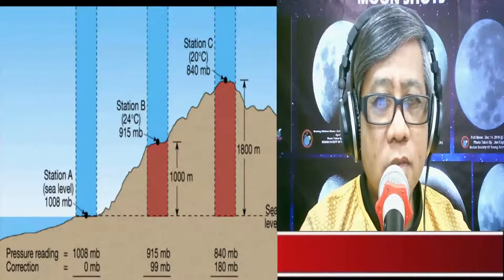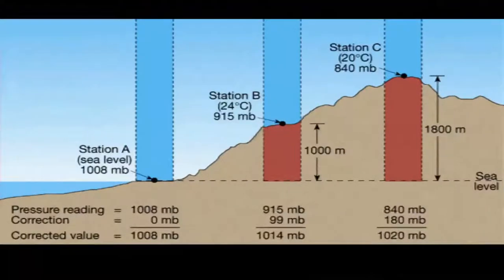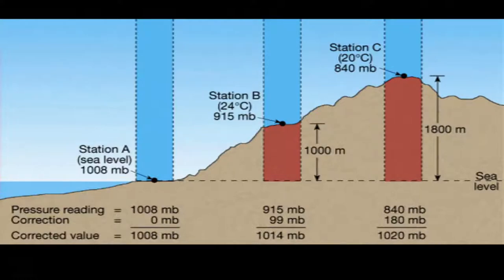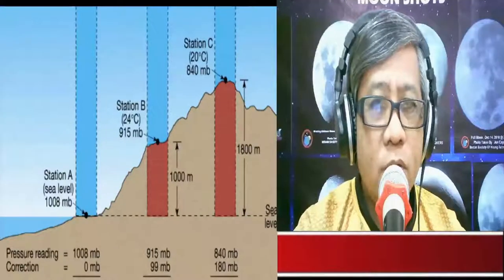As we increase in altitude, air pressure decreases. Looking at three stations: Station A is at sea level with an air pressure reading of 1008 millibars. Station B is at 1000 meters height with an air pressure of 915 millibars. Station C is 1800 meters high with an air pressure reading of 840 millibars. The higher we go, the lower the air pressure.